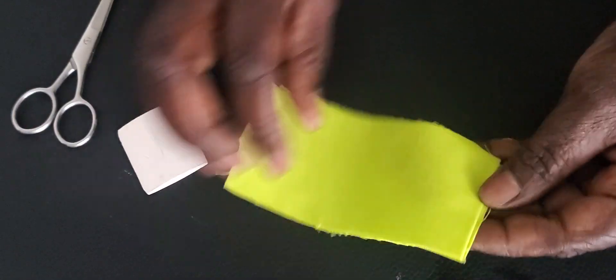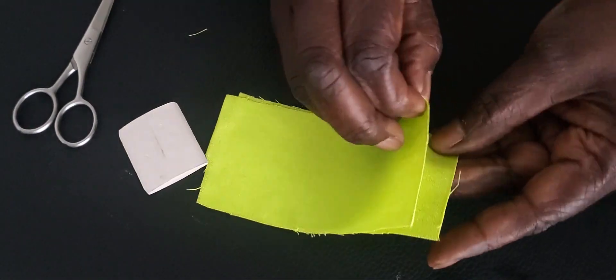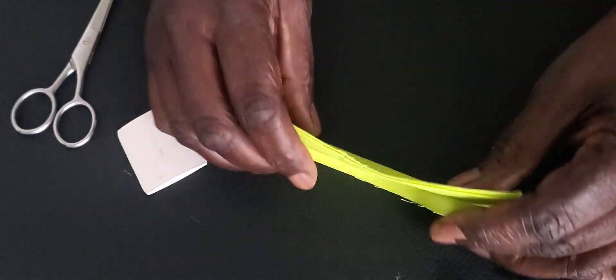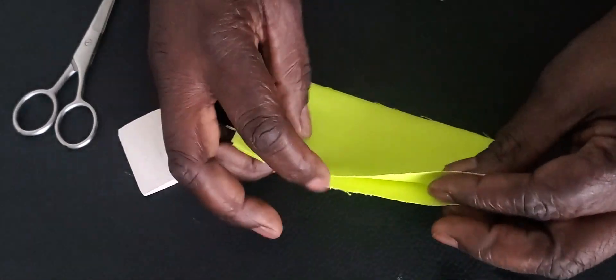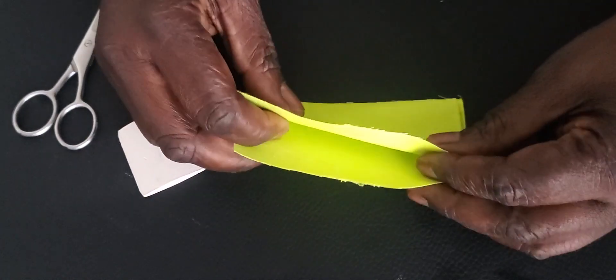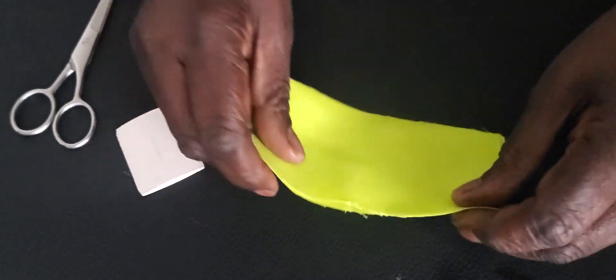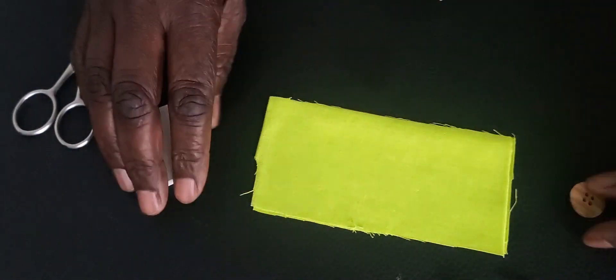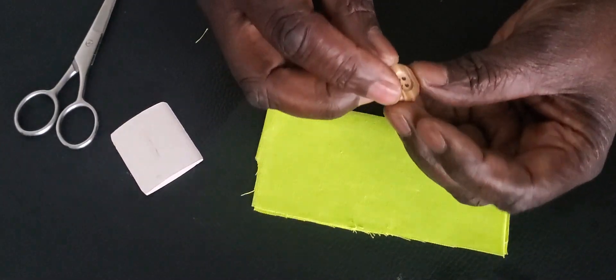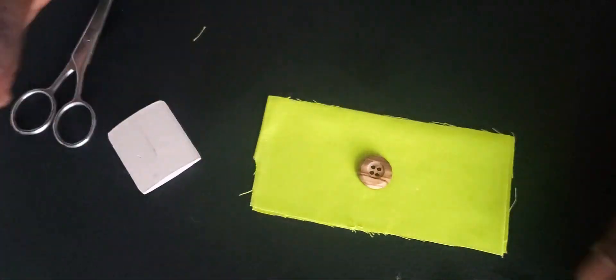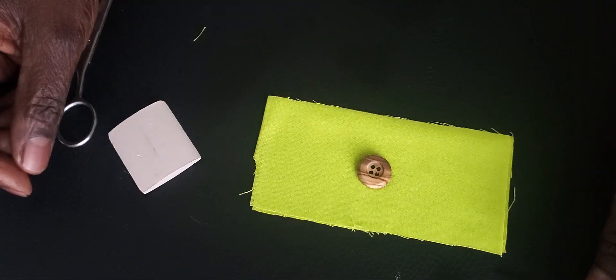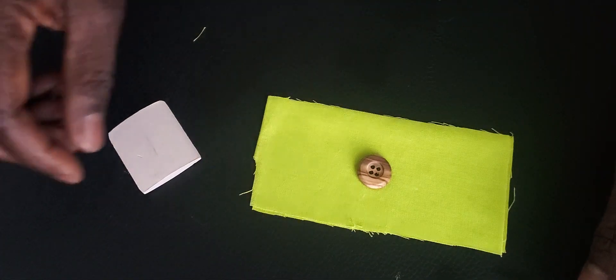How to determine buttonhole size. A buttonhole is always done on two pieces of fabric. So what you're going to do is place the button on the spot where you want your buttonhole to be.